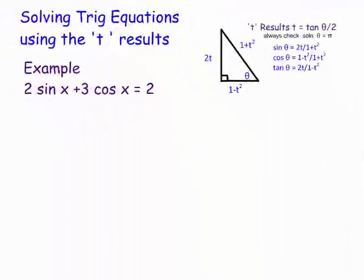Welcome to Maths with Bob. Today we're looking at solving trig equations using what's called the t-results. The t-results are basically a substitution for a trig expression, finding sine x and cos x expressed in terms of this new variable t. Now t is actually tan(θ/2), and we can quite easily get these results.